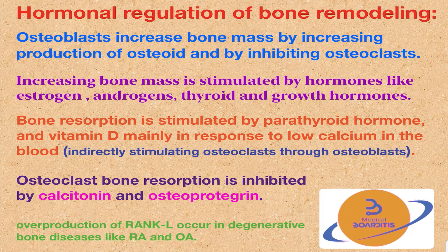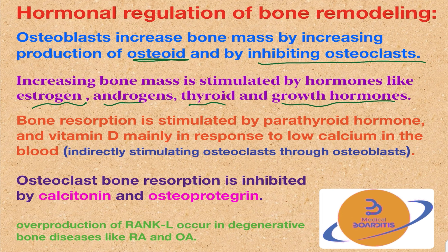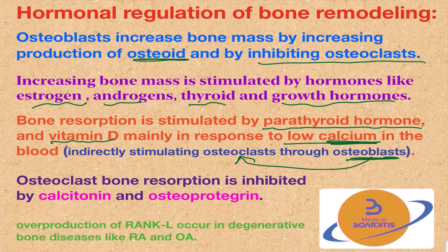Hormones play a major role in regulating the rate of bone remodeling. Osteoblasts increase bone mass by increasing osteoid production and inhibiting osteoclasts. This is stimulated by hormones such as estrogen, androgen, thyroid hormone, and growth hormone. Bone resorption is stimulated by parathyroid hormone and vitamin D, mainly in response to low blood calcium, indirectly through stimulation of osteoblasts — since osteoclasts do not have receptors for PTH or vitamin D; those receptors are located on osteoblasts.